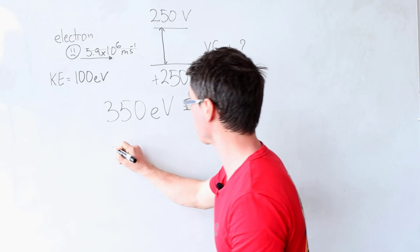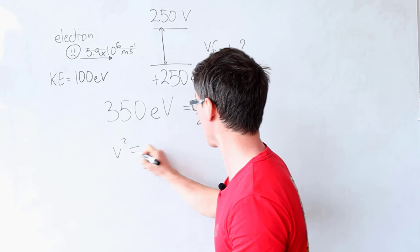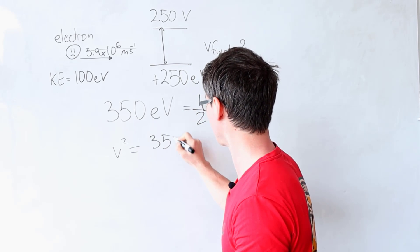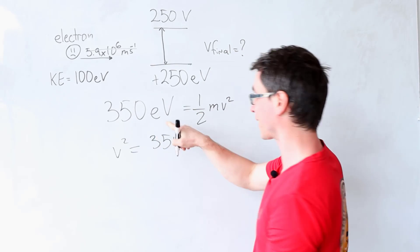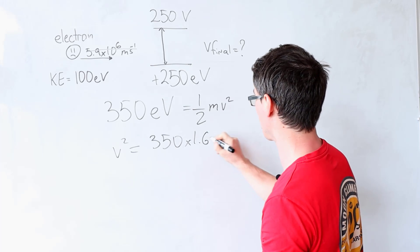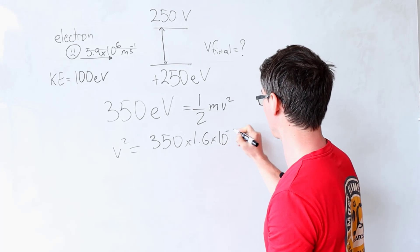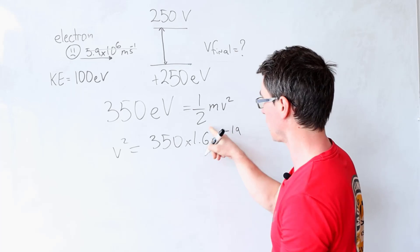Let's rearrange for the speed, so v squared will be equal to 350. Let's convert that to joules. If I can see the e, I multiply by it, so it'll be times 1.6 times 10 to the power of minus 19.